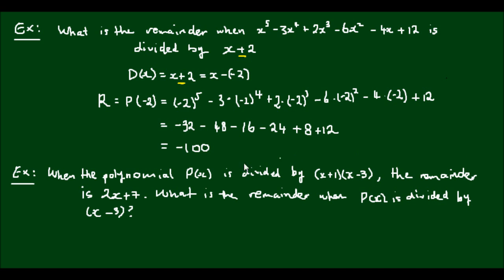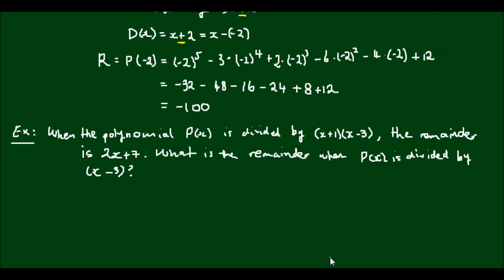Let's do another example. When the polynomial P of X is divided by X plus 1 times X minus 3, the remainder is 2X plus 7. What is the remainder when polynomial P of X is divided by X minus 3? To do this one I'm going to write out the division identity. So I'm going to write P of X is equal to X plus 1, X minus 3,